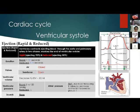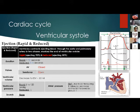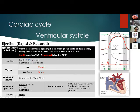The next part of ventricular systole is ventricular ejection, occurring in two different phases: rapid ejection, which ejects approximately 70% of the blood, and reduced ejection, which ejects 30%. As seen on the curves, aortic pressure increases, left atrial pressure begins to drop, and the end-systolic volume is approximately 50 milliliters. Ventricular pressure first increases to 120 mmHg then is reduced.